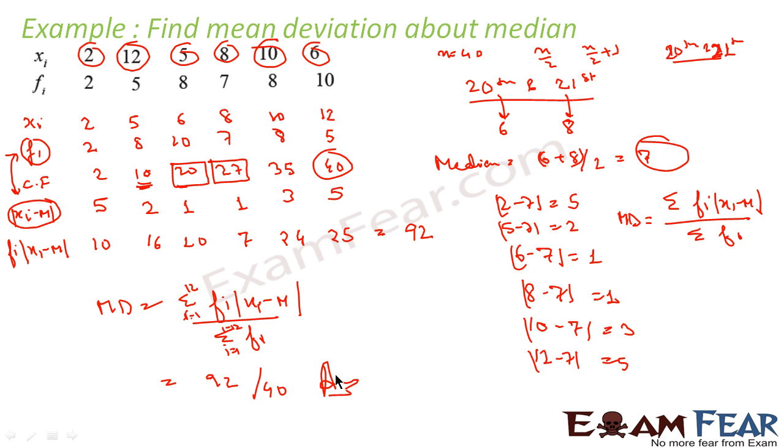So this is our answer. So the mean deviation about median for this data is 92 by 40.